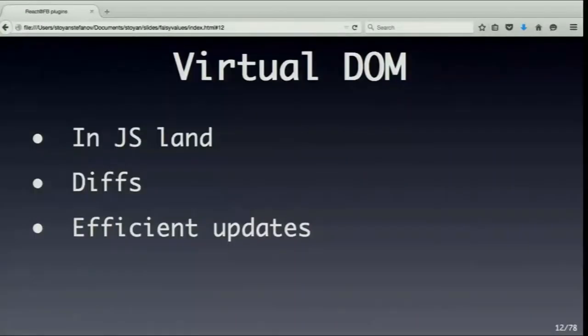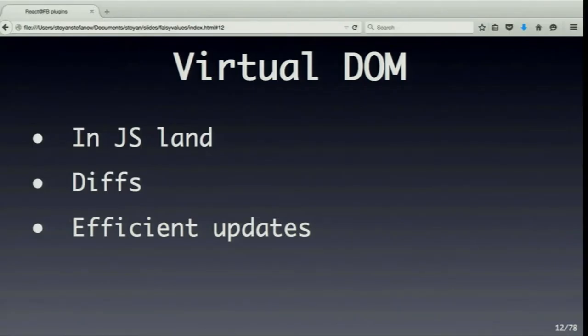So how does React figure it out? There's the idea of the virtual DOM. Everything happens in JavaScript land — we have tree structures that represent how things will eventually look in the DOM, as simple JavaScript objects. When something changes, you take your virtual DOM representation before and after, look for any differences, compute the minimal amount of updates needed, batch them, and do them at once so they're efficient.